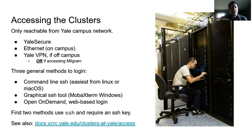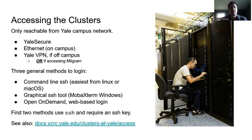Accessing the clusters is a somewhat complex process depending on the user. To even be able to access the cluster, you need to be on the correct internet connection — either Yale Secure or Ethernet on campus, or on the Yale VPN. You also have to be on the Yale VPN if you're ever trying to access Milgram, no matter whether you're on campus or not. There are three general methods to logging in: command line SSH, most commonly used on Linux or Mac OS; graphical SSH tools like MobaXterm or CyberDuck, more common on Windows; and Open On-Demand, a web-based application that allows you to log in and navigate the cluster just like you are surfing the web.